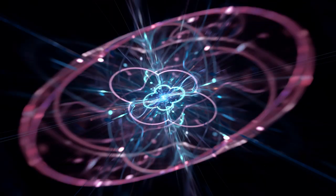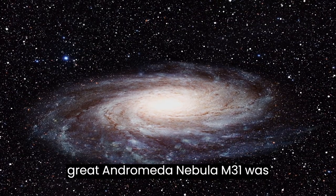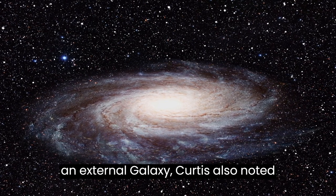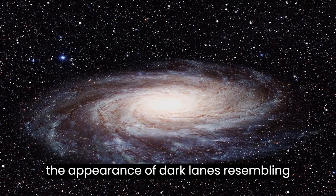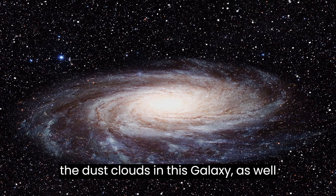To support his claim that the Great Andromeda Nebula, M31, was an external galaxy, Curtis also noted the appearance of dark lanes resembling the dust clouds in this galaxy, as well as the significant Doppler shift.